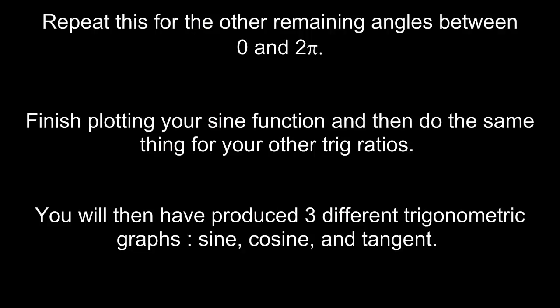Repeat this process for the other remaining angles between 0 and 2 pi. Finish plotting your sine function, then do the same thing for your other trig ratios. You'll have produced three different trigonometric graphs: sine, cosine, and tangent.